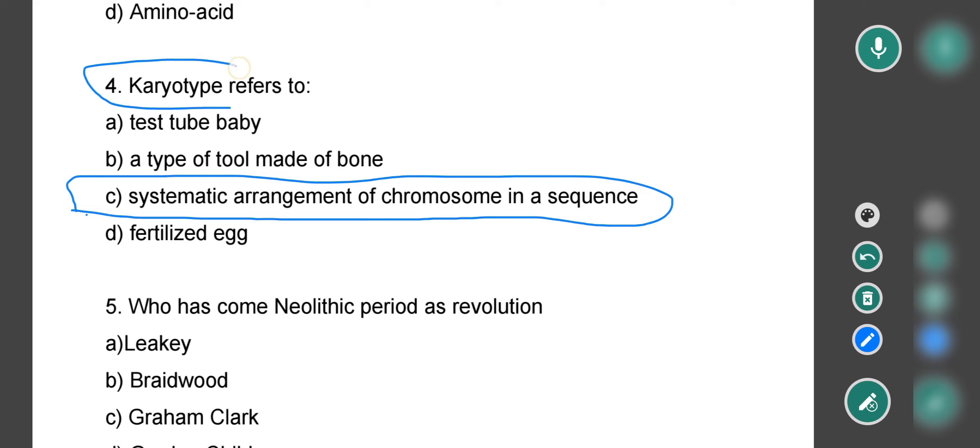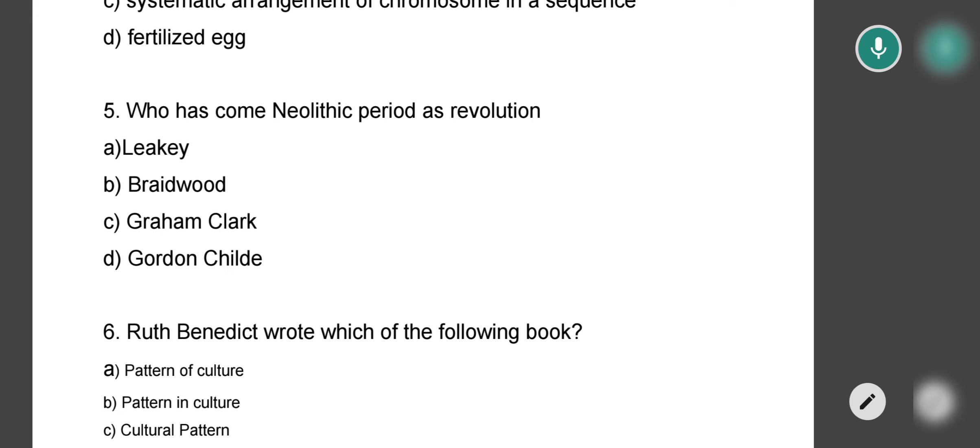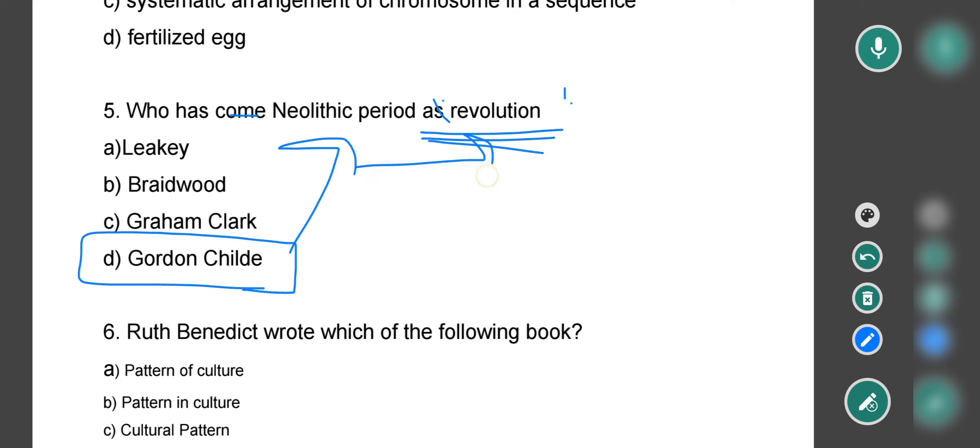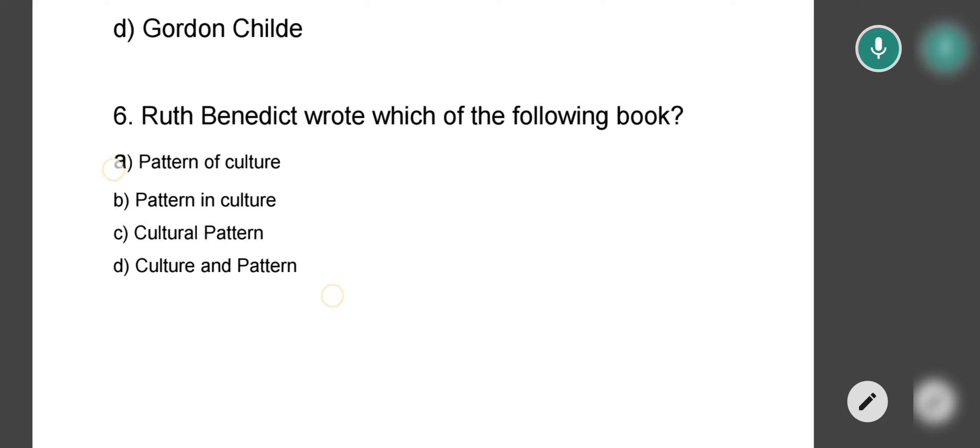Next question asks: Who has called the Neolithic period as revolution? Who called the Neolithic period a revolution? Options are Leakey, Braidwood, Graham Clark, or Gordon Childe. The correct option is Gordon Childe. Gordon Childe called the Neolithic period a revolution.